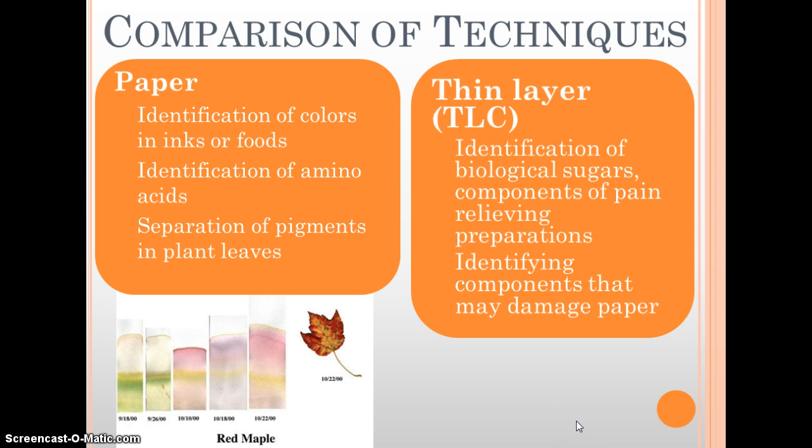Thin layer chromatography is going to identify biological sugars, pain relieving preparation components, anything that can damage papers. So thin layer chromatography is actually a sheet of acetate or type of plastic with a silica gel on top.